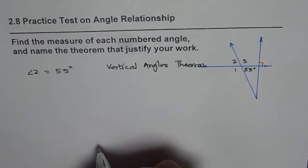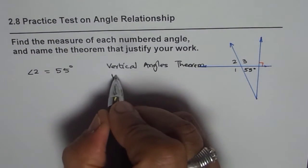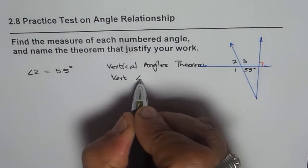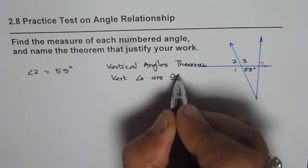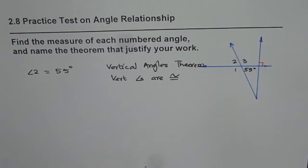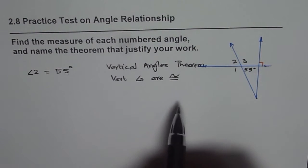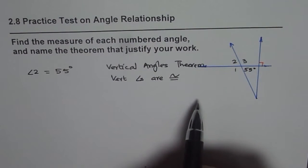You can also write this in short form. That is, vertical angles are congruent, and therefore their measurement is same. So we found angle 2 from the given angle 55.